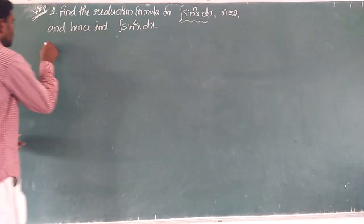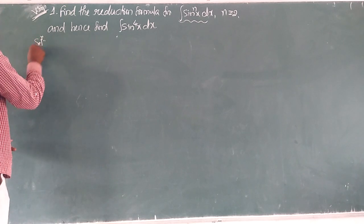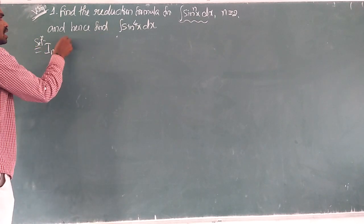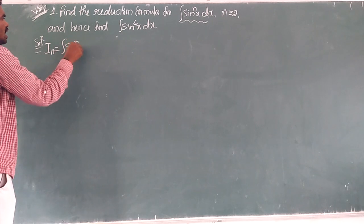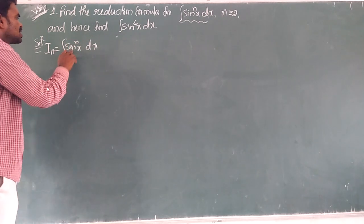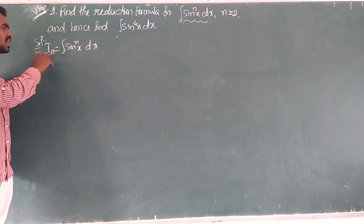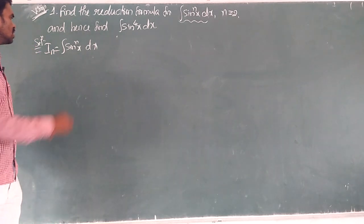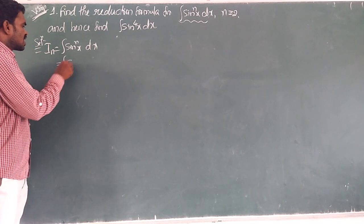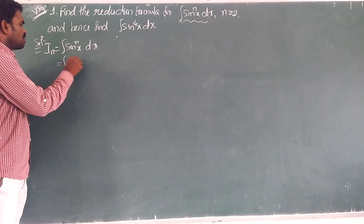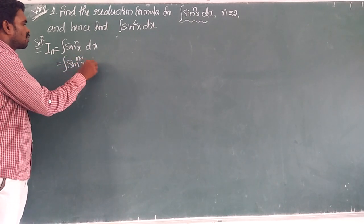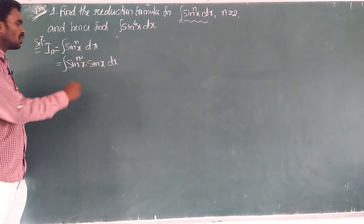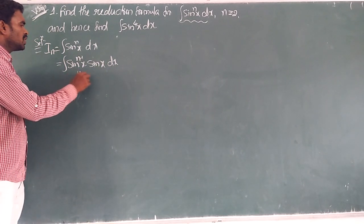First we will take the question. Let the given integral be taken as I_n. The question is: integration of sin^n(x) dx. Here it consists of power n, that is why we have taken I_n. So now this can be written as sin^(n-1)(x) into sin(x) dx. Now in the next step I am going to apply the u·v integration method.